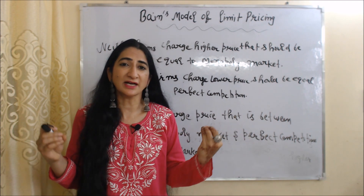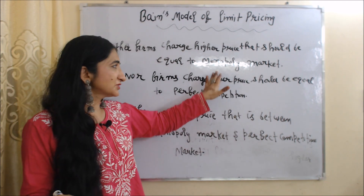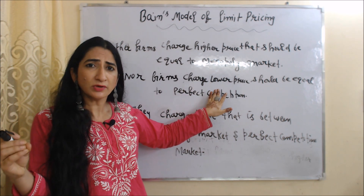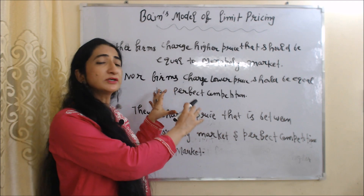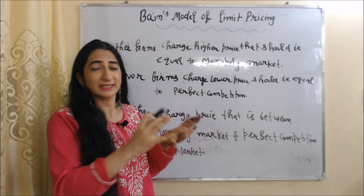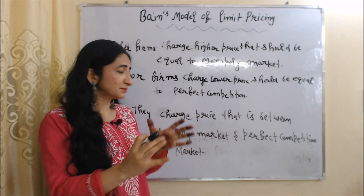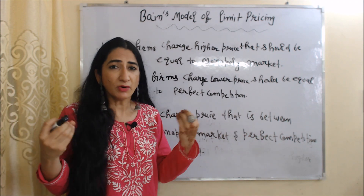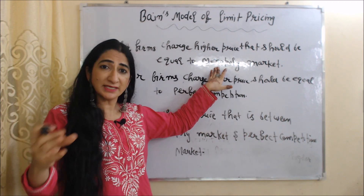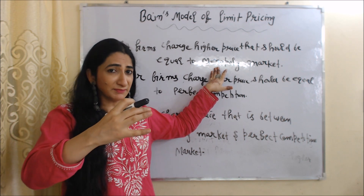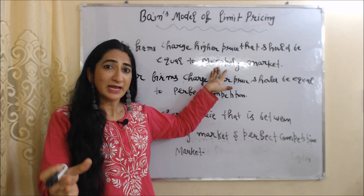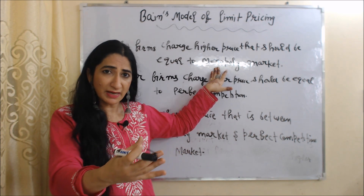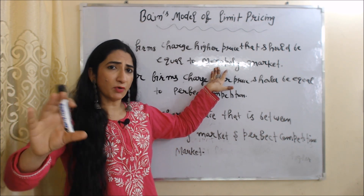One important thing about this model: firms neither charge a price equal to the monopoly market nor a price so low that it equals perfect competition. They charge a price between the monopoly market and the perfect competition market. Because if they charge a price equal to the monopoly market, their profit will increase more, and new firms will enter the market, causing profit of all firms to fall.